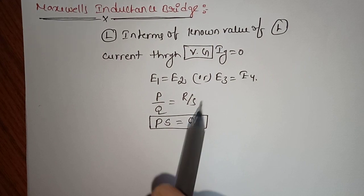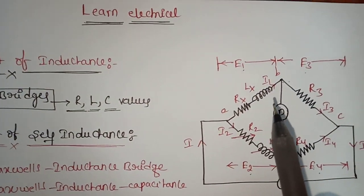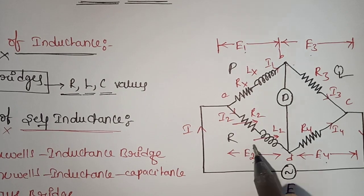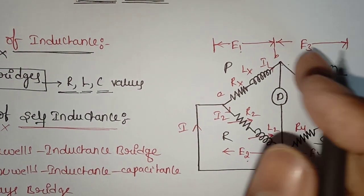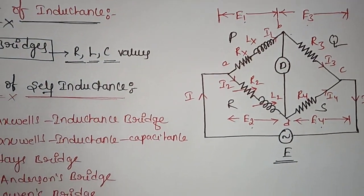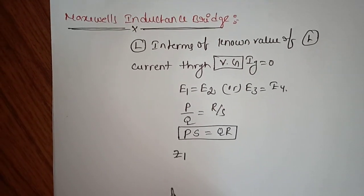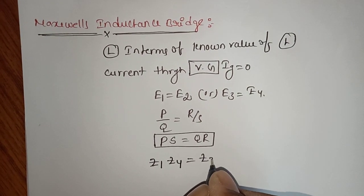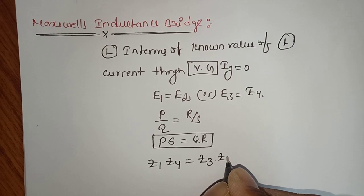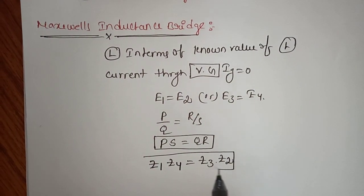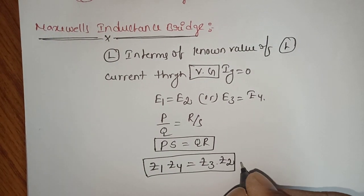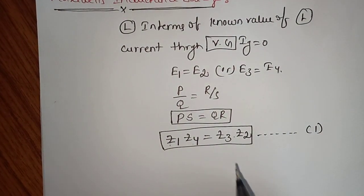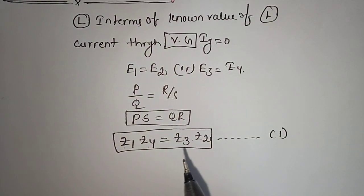Here P and S represent opposite impedances. In the Wheatstone bridge, the arms are called P, Q, R, and S. Utilizing these values, we write the balancing equation: in place of P we write Z1, in place of S we write Z4, in place of Q we write Z3, and in place of R we write Z2. So Z1·Z4 equals Z3·Z2. This is equation number 1. Now we find the values of Z1, Z4, Z3, and Z2.